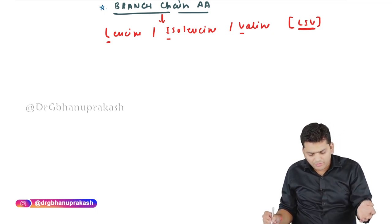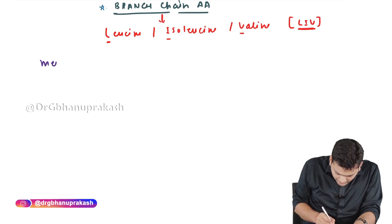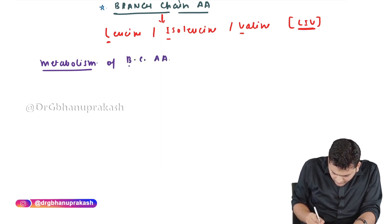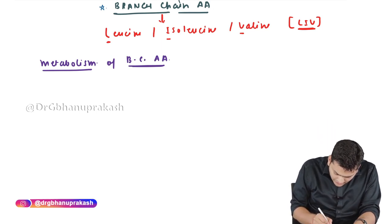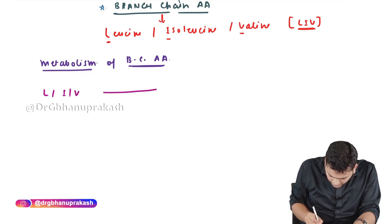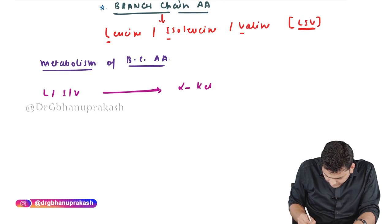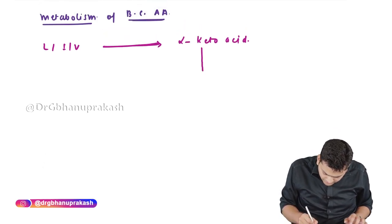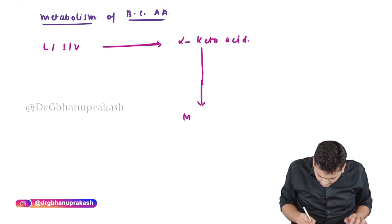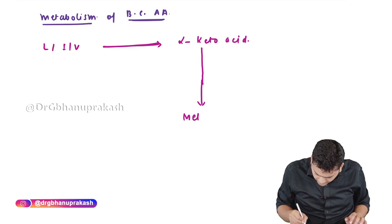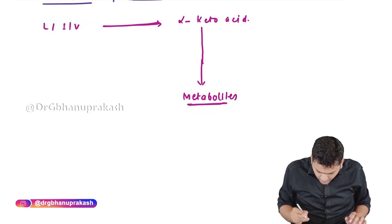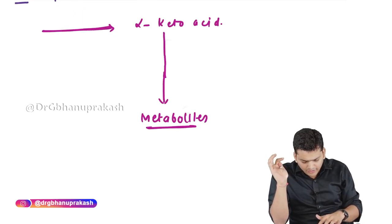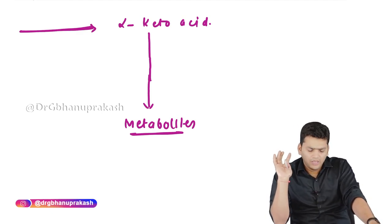When it comes to metabolism, the branched-chain amino acids share a common metabolic pathway. Leucine, isoleucine, and valine first convert into their respective alpha-keto acids, and those alpha-keto acids then ultimately convert into their final metabolites.